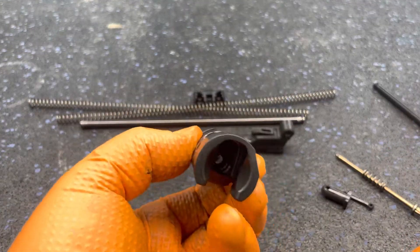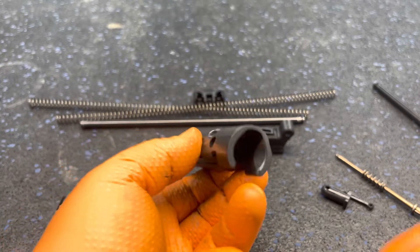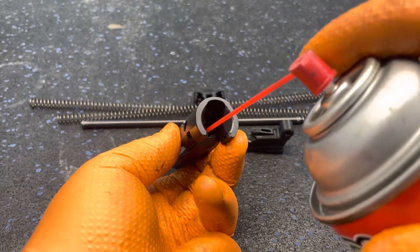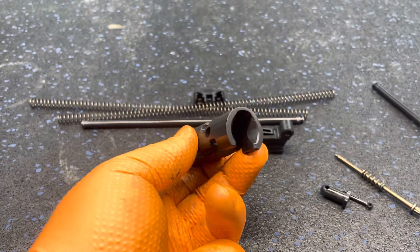Likewise, with cleaning the firing pin channel on the carrier, I use the carbon choke cleaner, follow it with a Q-tip.